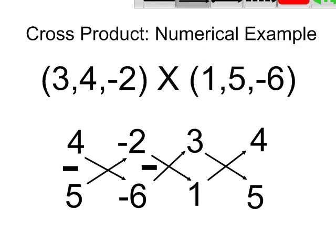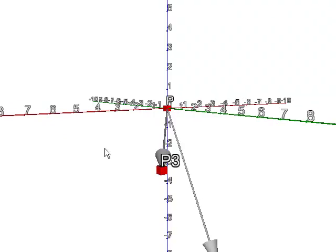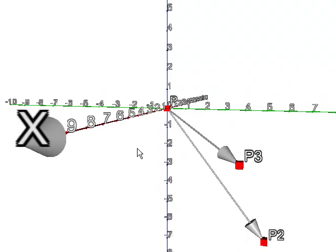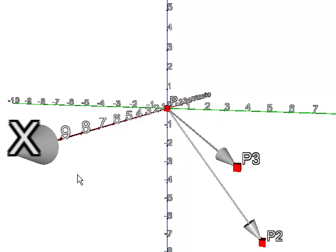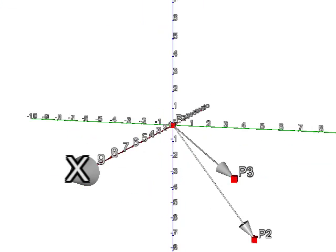Just to have a look at that actual construction in 3-space, there are my two vectors, and it might not be that obvious that those are the vectors we chose. And what I'm going to do is I am going to construct the cross product of those two vectors. So 3, 4, negative 2 cross 1, 5, negative 6.